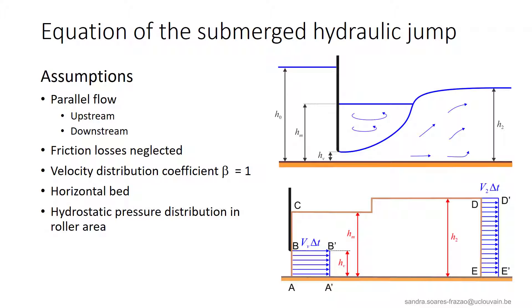In the submerged jump, the fast jet under the gate progressively spreads over the whole water depth. We will select the control volume such that we can assume a parallel flow at the upstream and downstream sides AB and DE with uniform velocity distribution, so the coefficient beta is equal to 1.